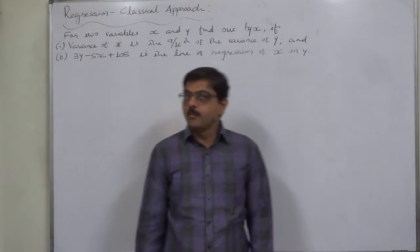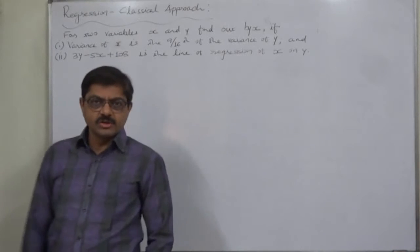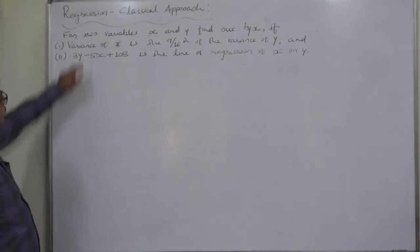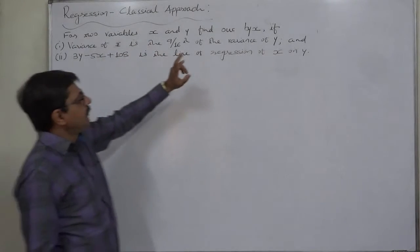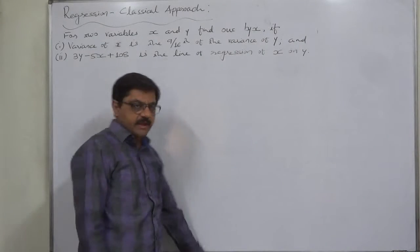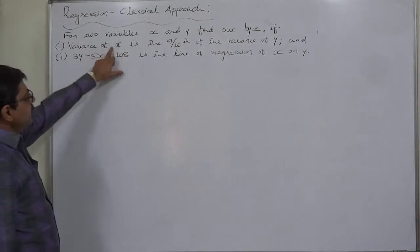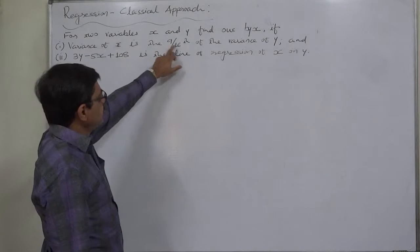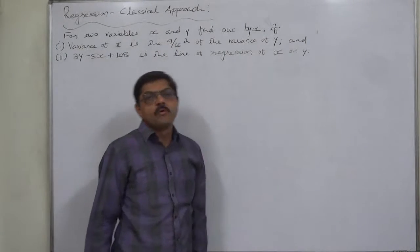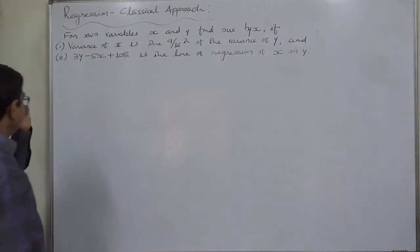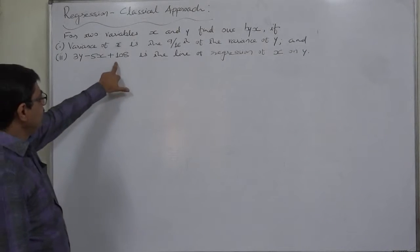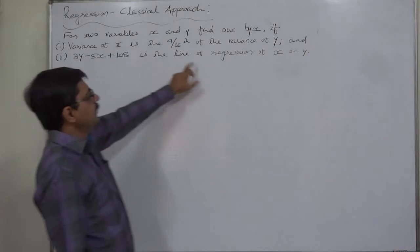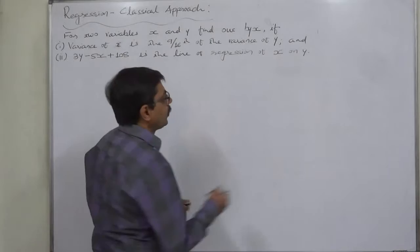Hello and welcome to one more case in regression or linear regression classical approach. This is for two variables x and y. Find out b_yx if: (1) variance of x is 9/16th of the variance of y, and (2) 3y minus 5x plus 108 is the line of regression of x on y.